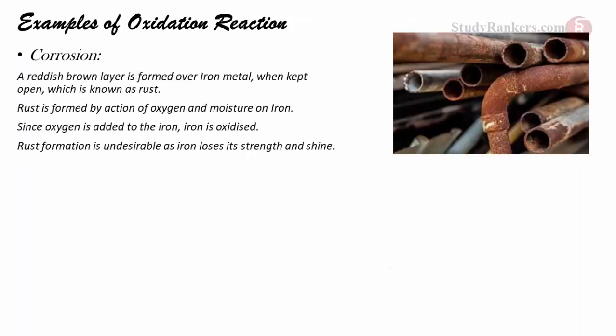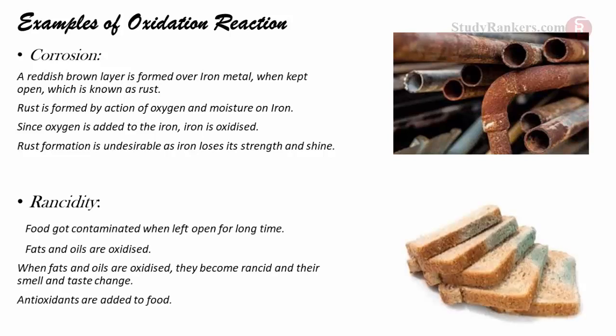Have you seen a brown layer over iron metal? That's a result of an oxidation reaction. Rust formation is an unwanted chemical process — iron is oxidized in the presence of moisture and air. You might have observed food getting contaminated when kept in the open. This is because fats and oils present in food are oxidized, they become rancid, and their smell and taste change. Such foods are no longer good for consumption. To prevent food from getting rancid, antioxidants are added. Another method is keeping food in cool storage like a refrigerator.